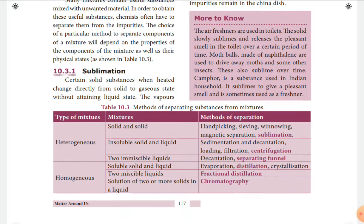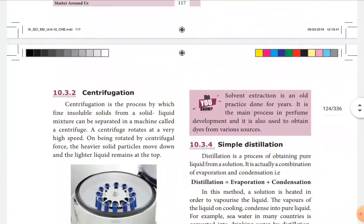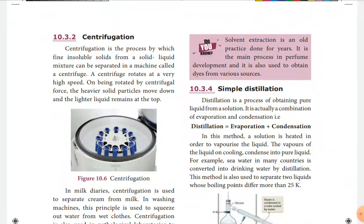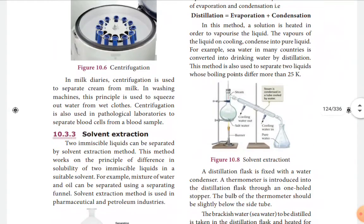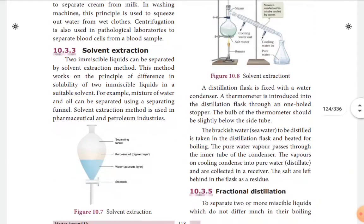Other separation methods include centrifugation, separating funnel, distillation, fractional distillation, and chromatography. Centrifugation is the process by which fine insoluble solids from a solid-liquid mixture can be separated using a machine called a centrifuge. Solvent extraction is used to separate two immiscible liquids — for example, kerosene and water can be separated using a separating funnel.